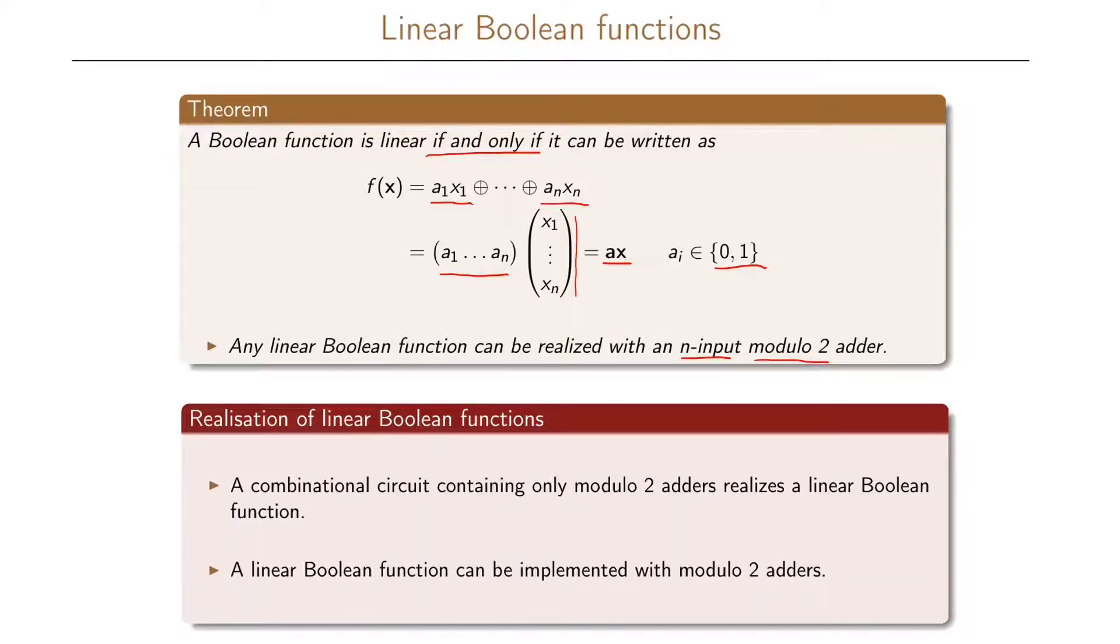So from this we can say that a combinational circuit that contains only modulo 2 adders realizes a linear Boolean function. And we can also say that a linear Boolean function can be implemented with only using a set of modulo 2 adders.